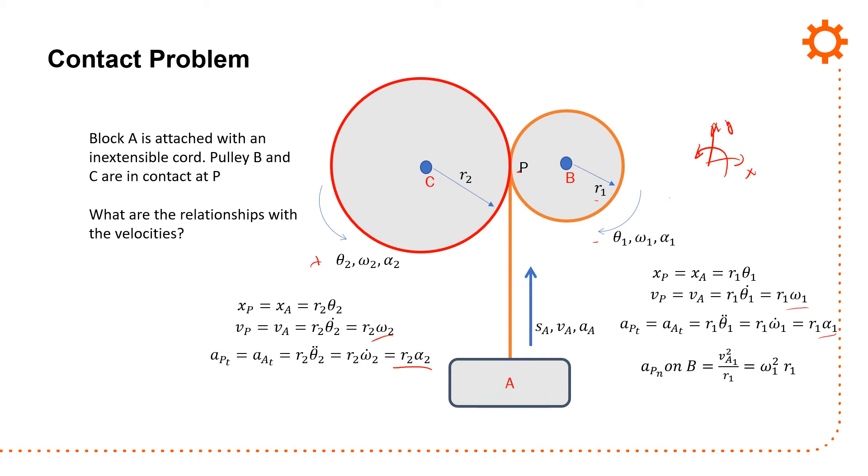What is different is here the normal acceleration on C. The normal acceleration on C is going to be omega squared r2. So I can write r1 theta 1 equals r2 theta 2, and I can say r1 omega 1 equals r2 omega 2, and then finally r1 alpha 1 equals r2 alpha 2. So I have these relationships for contact problems.